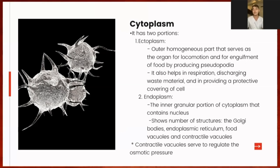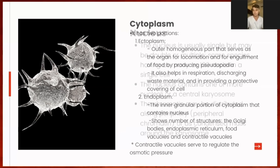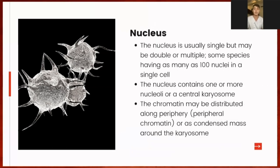The endoplasm refers to the inner granular portion of cytoplasm that contains the nucleus. Structures found in the endoplasm include Golgi bodies, endoplasmic reticulum, food vacuoles, and contractile vacuoles. Contractile vacuoles serve to regulate osmotic pressure. Another special characteristic of Protozoans is the presence of a true nucleus, which is usually single but may be double or multiple; some species may have as many as 100 nuclei in a single cell. The nucleus contains one or more nucleoli, or the central karyosome. The chromatin may be distributed along the periphery as peripheral chromatin, or may be present as a condensed mass around the karyosome.